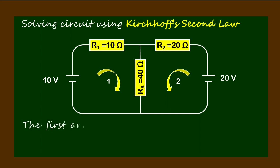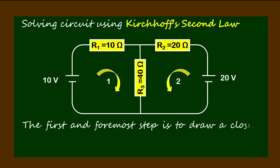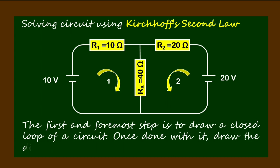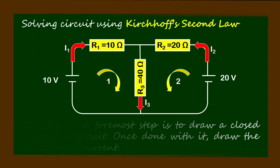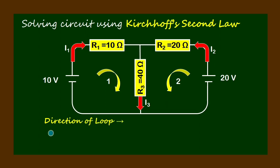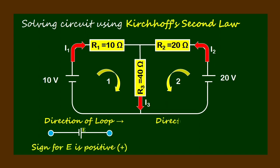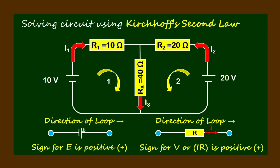The first and foremost step is to draw a closed loop of a circuit. Once done, draw the direction of current. Defining the sign convention is very important. Consider the direction of the loop: the sign for EMF (E) is positive, and the sign for voltage V, or I times R, is positive.